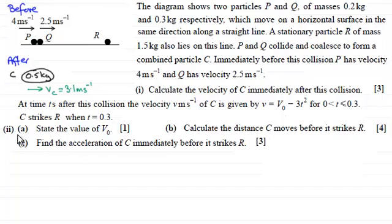And for the second part of the question then, in part a, we've got to state the value of v₀. And then go on in part b to calculate the distance C moves before it strikes R. And then in the third part, find the acceleration of C immediately before it strikes R.